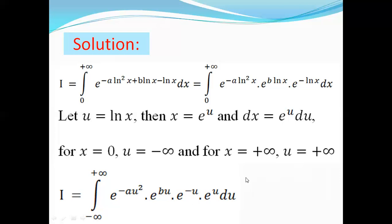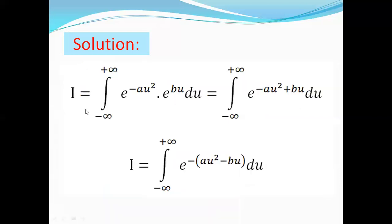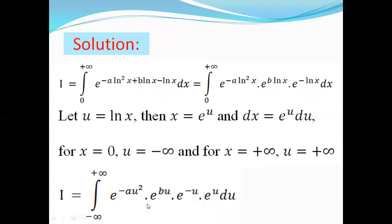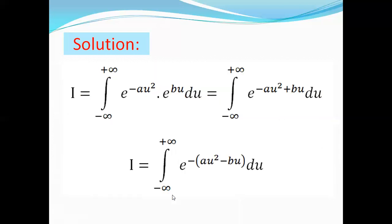Let's now make some simplifications. So I becomes the integral from minus infinity to plus infinity of e to the power minus a·u², multiplied by e to the power b·u, and here e to the power minus u plus u equals e to the power 0, which is 1. So I becomes the integral from minus infinity to plus infinity of e to the power minus a·u², multiplied by e to the power b·u.